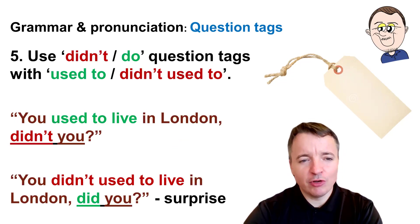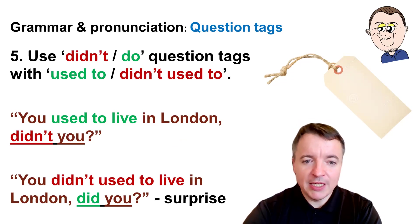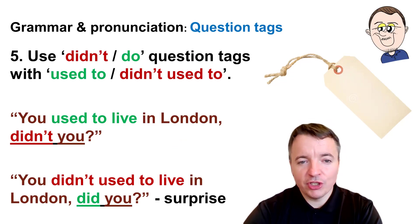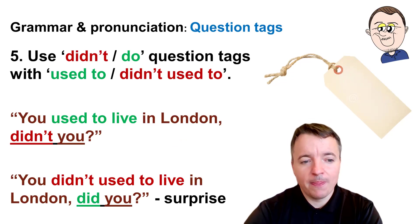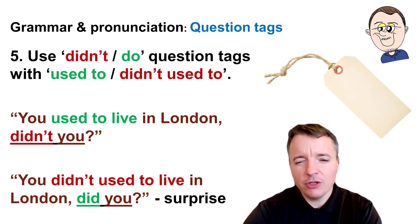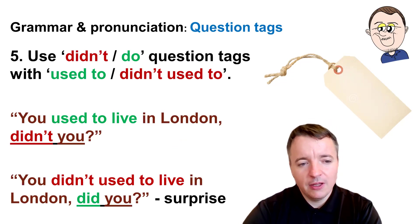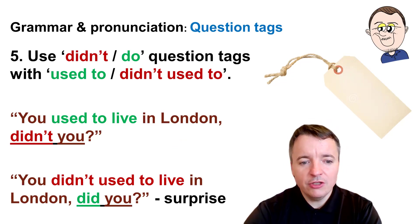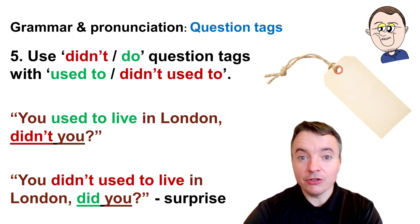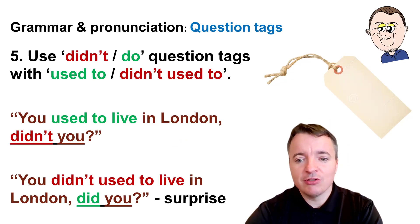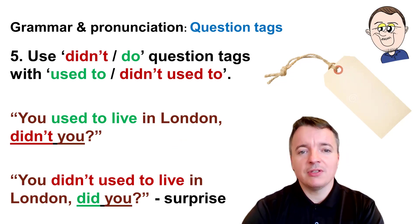This looks a little complicated, but it isn't. We use 'didn't' or 'did' as question tags with 'used to'. For example: You used to live in London, didn't you? And if you want to show surprise: You didn't used to live in London, did you? That's used to show surprise.